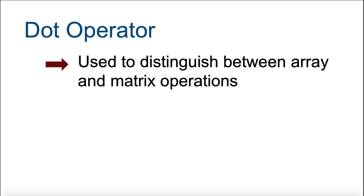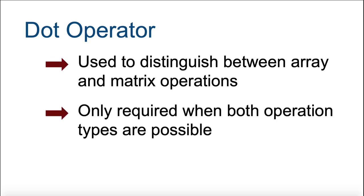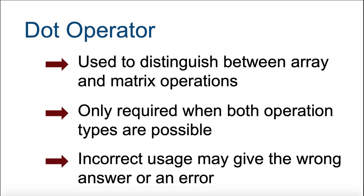The dot operator is used in MATLAB to distinguish between array and matrix operations, and is only required in situations where both types of operations are possible. Omitting the dot operator when it's needed or adding it when it's unnecessary may give you the wrong answer for the calculation you're trying to perform.